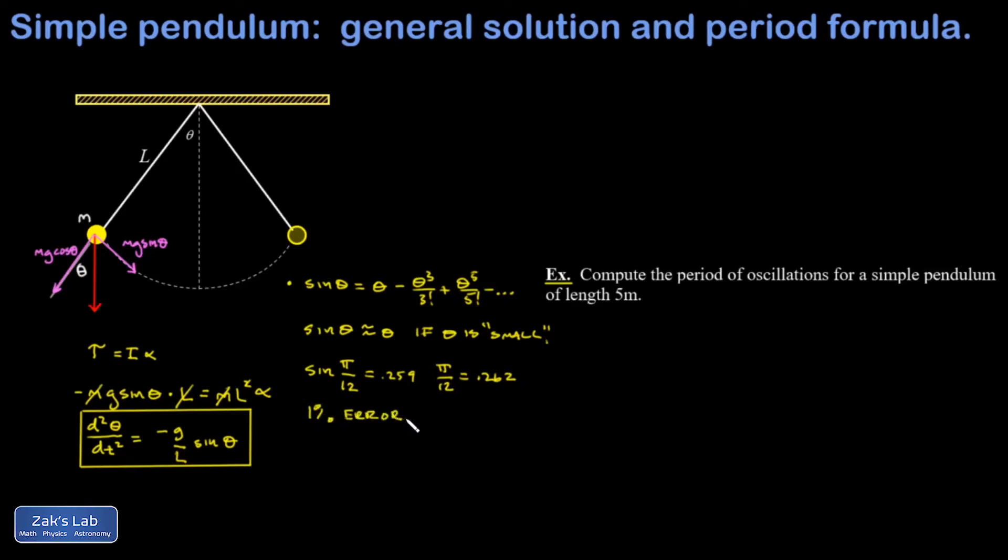And that comes out to about a 1% difference. So with a 15-degree oscillation, we're talking about only a 1% error in our calculation. And if you make theta smaller than that, it gets even more accurate.